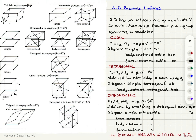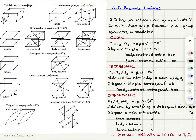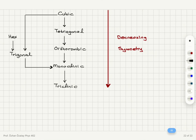Monoclinic has simple and base-centered. Triclinic has only simple triclinic. Then we have trigonal and hexagonal, which is base-centered hexagonal. The most symmetric is cubic; distorting gives tetragonal, then orthorhombic, then monoclinic, and triclinic. By distorting cubic we can also obtain trigonal, and from trigonal we can obtain monoclinic. Hexagonal has higher symmetry compared to trigonal.